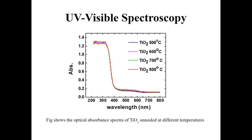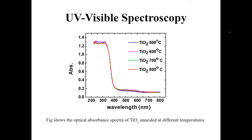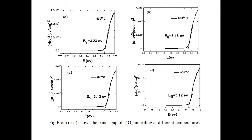I also performed UV-visible spectroscopy for different annealing temperatures. As seen in the figure, the relation between wavelength and absorption is typical as in the literature. Clear titanium dioxide has absorption in the UV region. We also calculated the energy band gap and found that the energy band gap decreases as the annealing temperature increases.